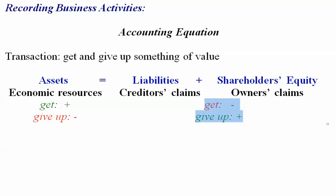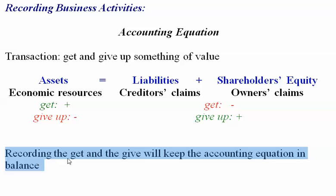With each transaction of a business, we're going to record it under the accounting equation, and what we'll see is that by recording what you get and give up, you'll be keeping the accounting equation in balance, which is very important. With each transaction, you're going to ask yourself: what did I get and what did I give up? Depending on that, it will determine whether assets, liabilities, or shareholders' equity changes. After you record your transactions, always look back and check that you kept the accounting equation in balance.